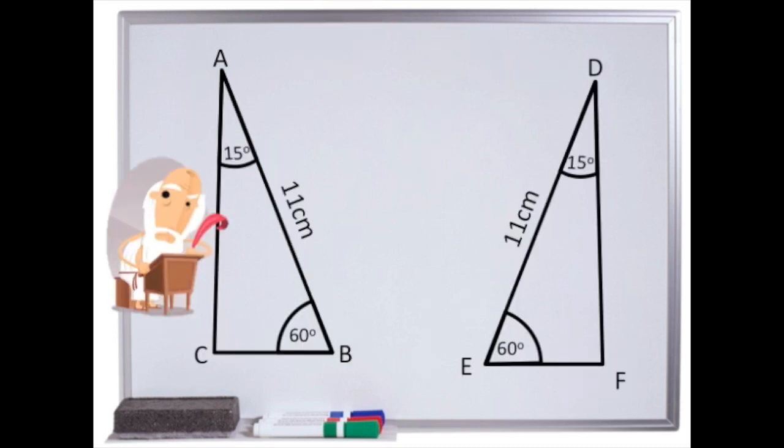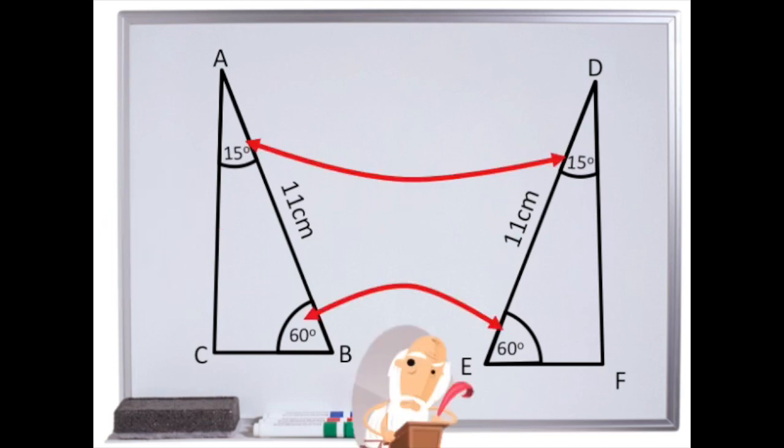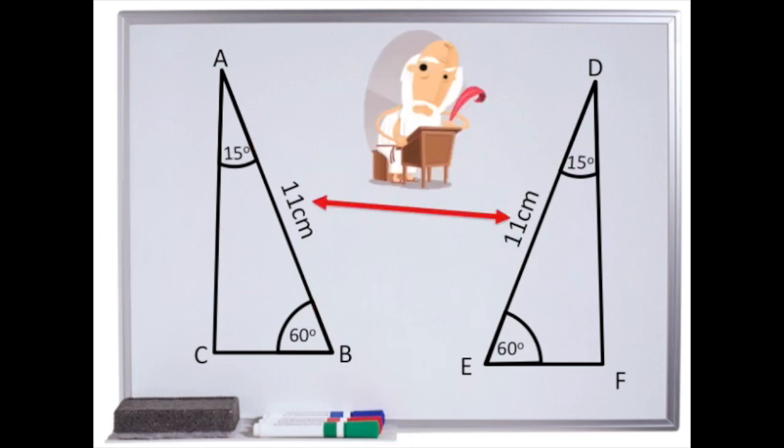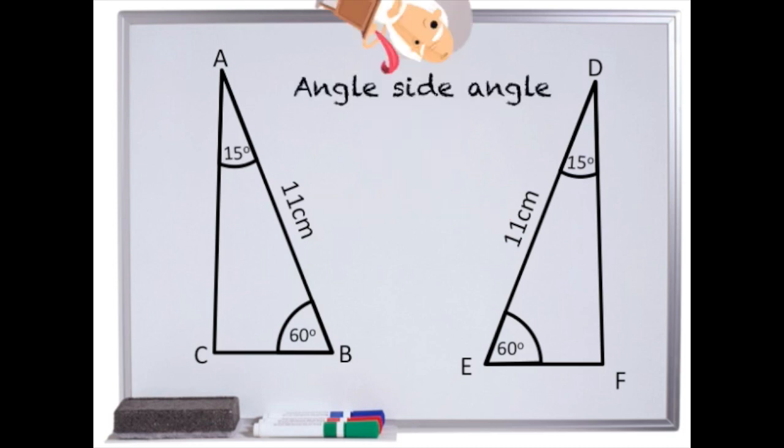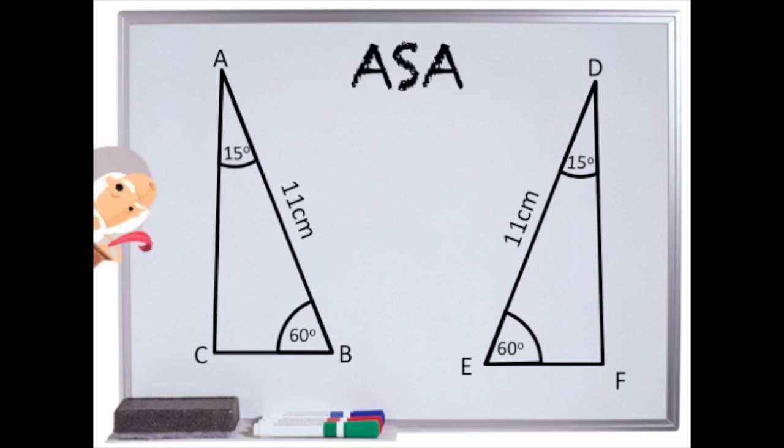The third way we can tell if two triangles are the same is if they have two angles the same and the side between the two angles the same. This way is called angle side angle. And in shorthand, that's ASA.